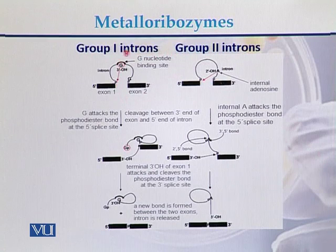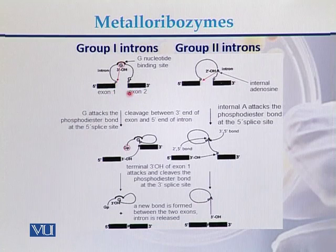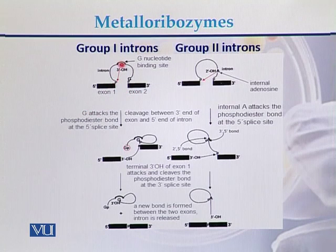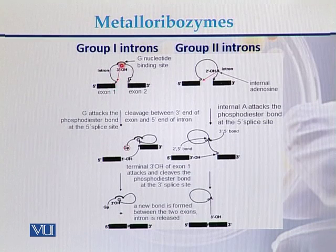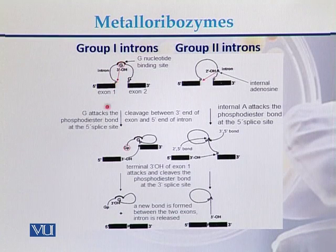In case of group 1 introns, we can see exon 1 and exon 2, and between these two exons there is an intron. In case of group 1 introns, a G that is present within the sequence of the intron attacks on the phosphodiester bond at the 5' splice end. Here is the 5' splice end of exon 1 and the intron — in the middle there is a G, and this G attacks on the phosphodiester bond.